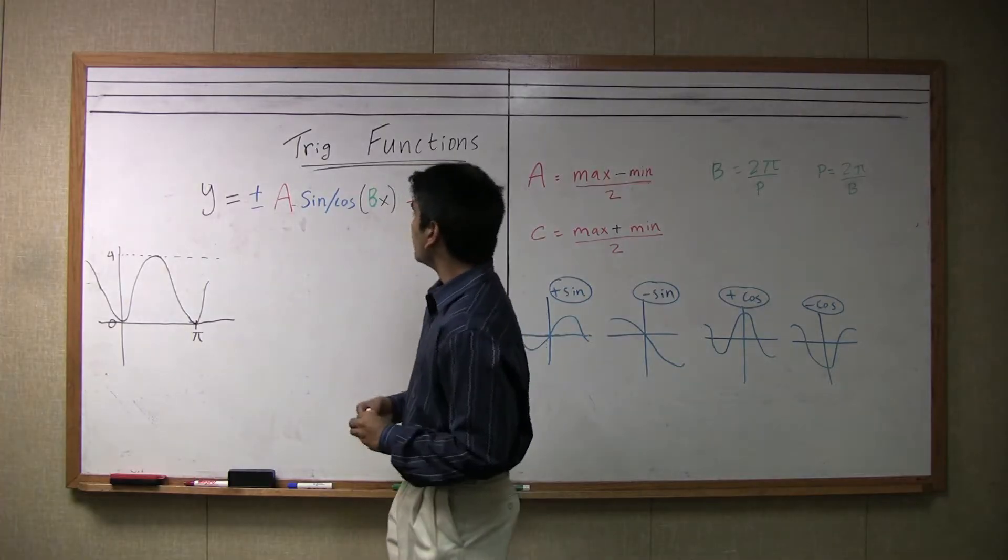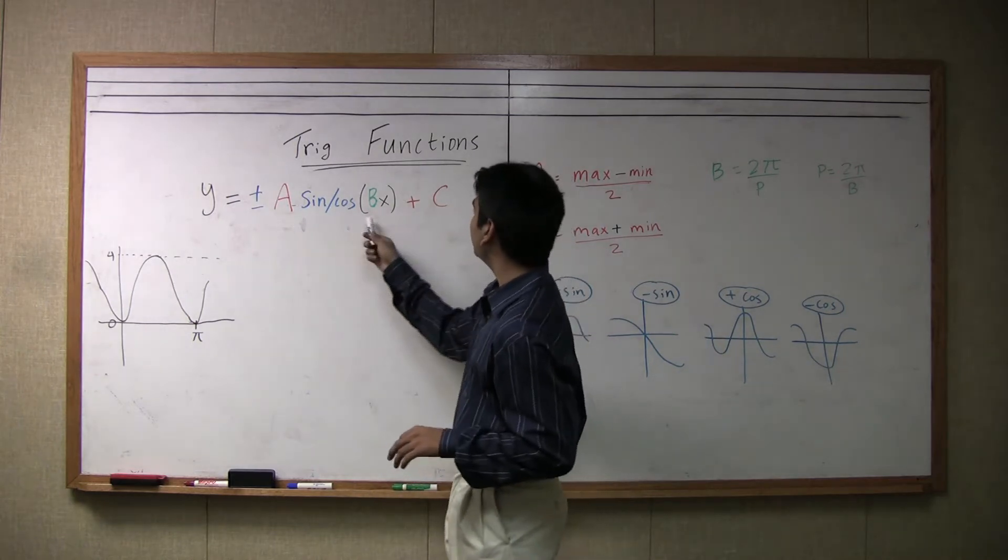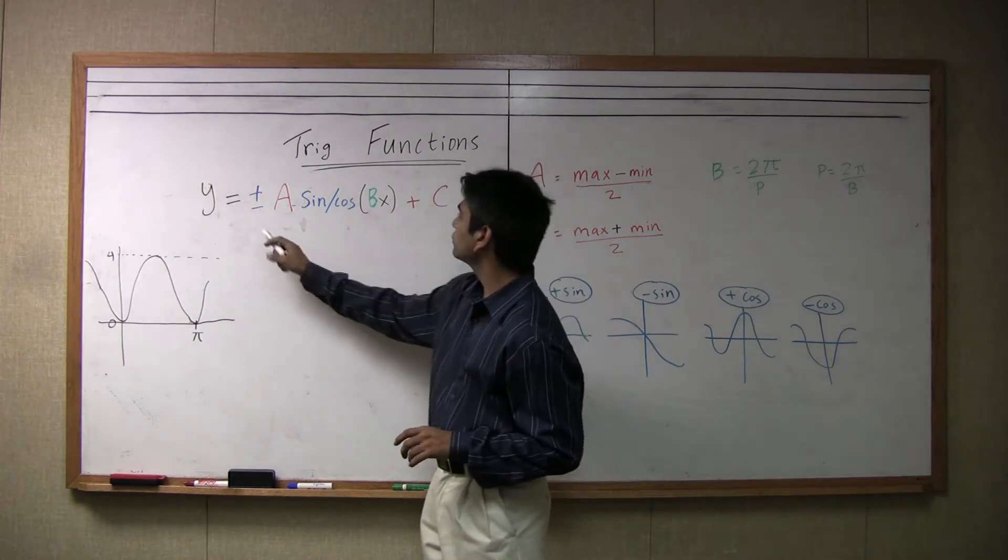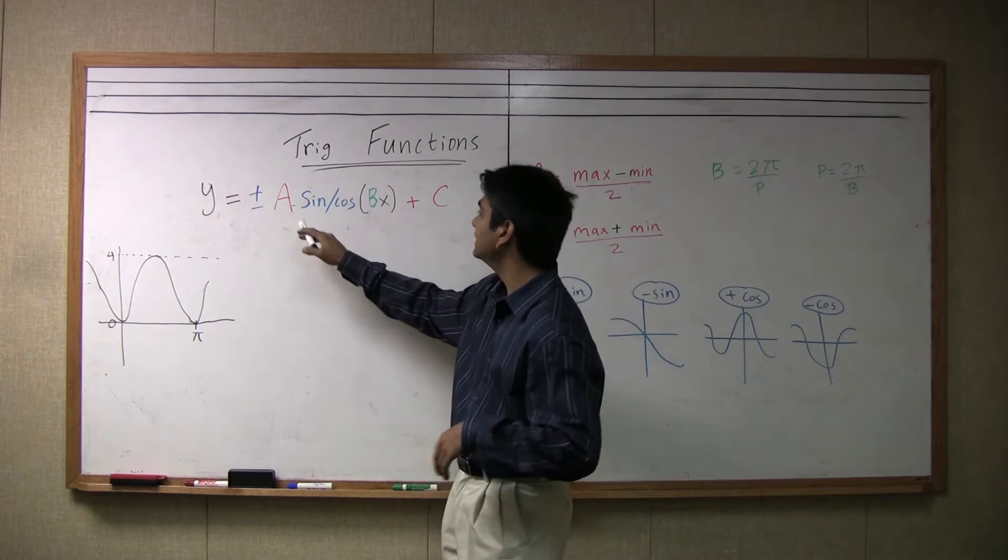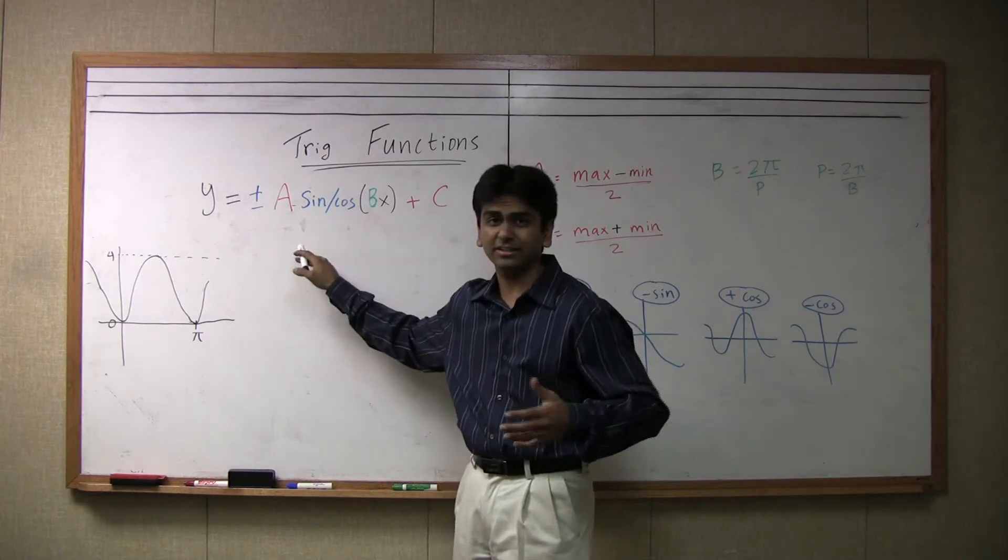So what we want to look at is four things: the a, b, and the c, and then also whether it's a positive sine, a negative sine, a positive cosine, or a negative cosine.